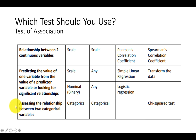You can also assess relationships between two categorical variables using the chi-square test. Chi-square will only give you percentages, so it's limited in what it tells you.